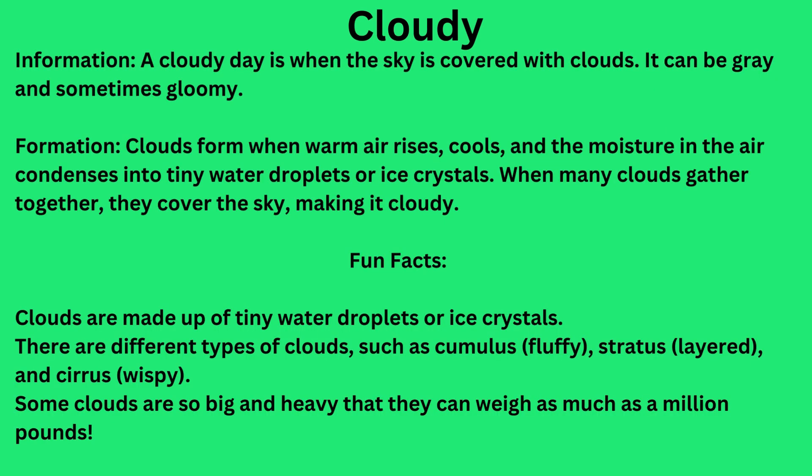Cloudy. A cloudy day is when the sky is covered with clouds. It can be gray and sometimes gloomy. Clouds form when warm air rises, cools, and the moisture in the air condenses into tiny water droplets or ice crystals. When many clouds gather together they cover the sky, making it cloudy.